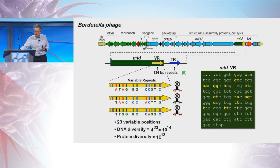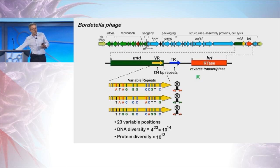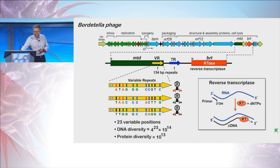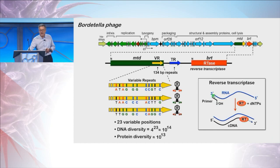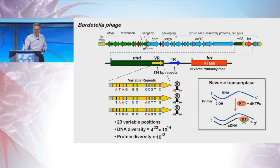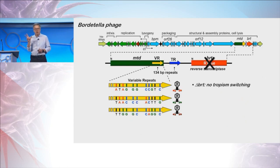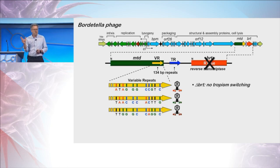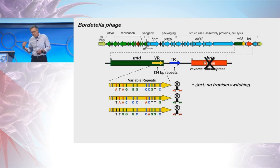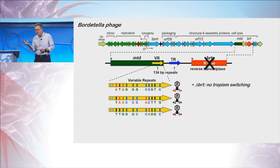What caught our attention is that these sequences were located right upstream of what looked to be a reverse transcriptase in a double-stranded DNA viral genome, where you wouldn't normally expect to find an enzyme like that. Reverse transcriptases are able to take an RNA template and, if supplied with a primer with a 3-prime or 2-prime hydroxyl and dNTPs, will synthesize complementary or cDNA. So we wondered what these various components could be doing. The first experiment was very simple: we deleted the reverse transcriptase. The virions were completely infectious, but they had lost the ability to switch tropism.